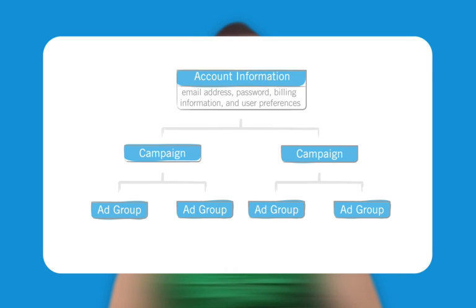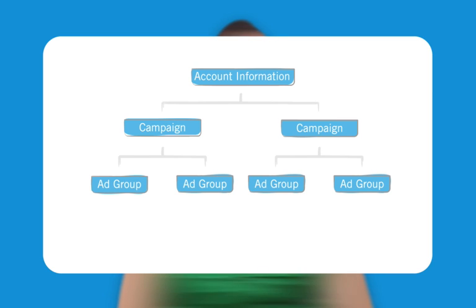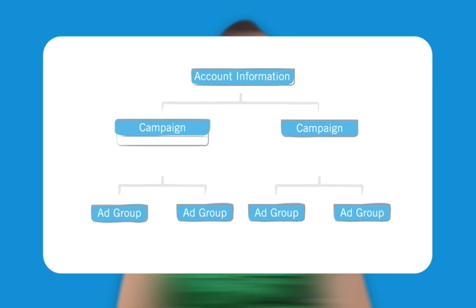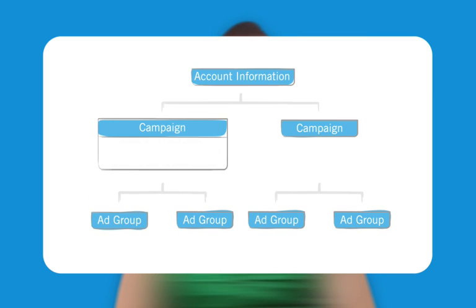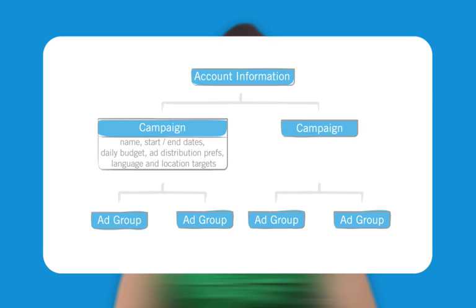Each account has one or more advertising campaigns. Campaigns contain the campaign name, start and end dates, daily budget, ad distribution preferences, target languages and locations, and other options. These are accessed from the edit campaign settings link.